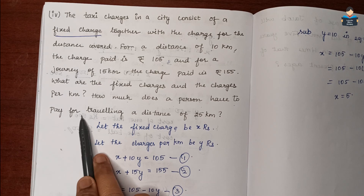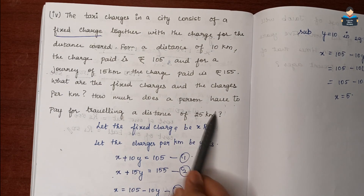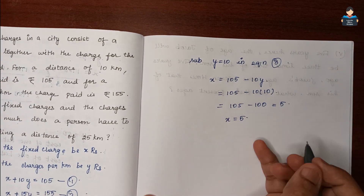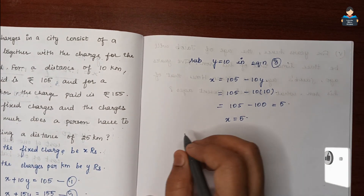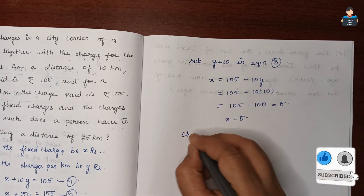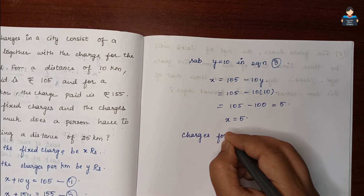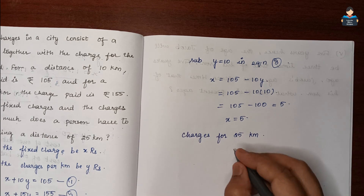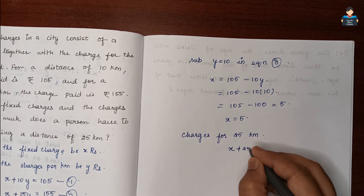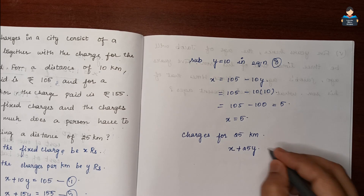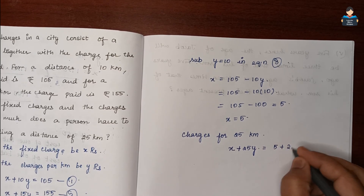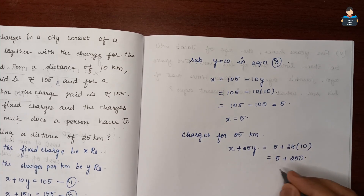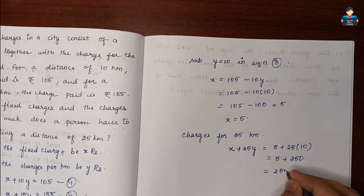How much does a person have to pay for travelling a distance of 25 km? Charges for 25 km = fixed charge + 25 × y = x + 25y = 5 + 25 × 10 = 5 + 250 = 255 rupees.